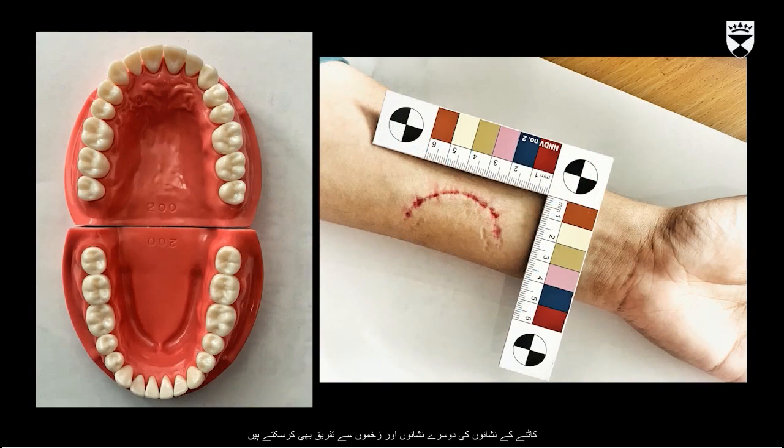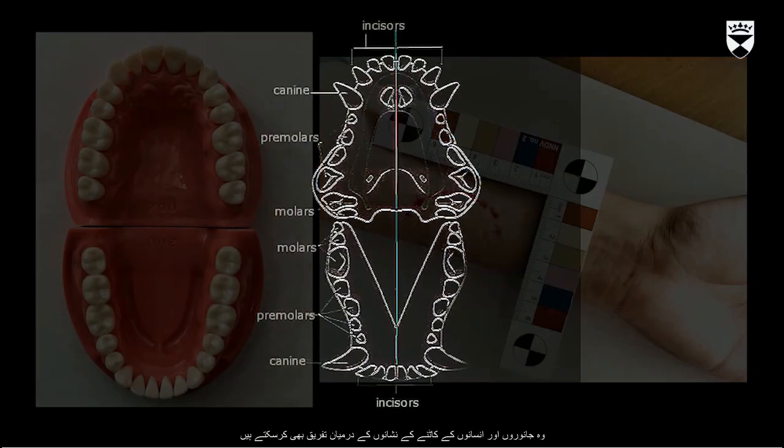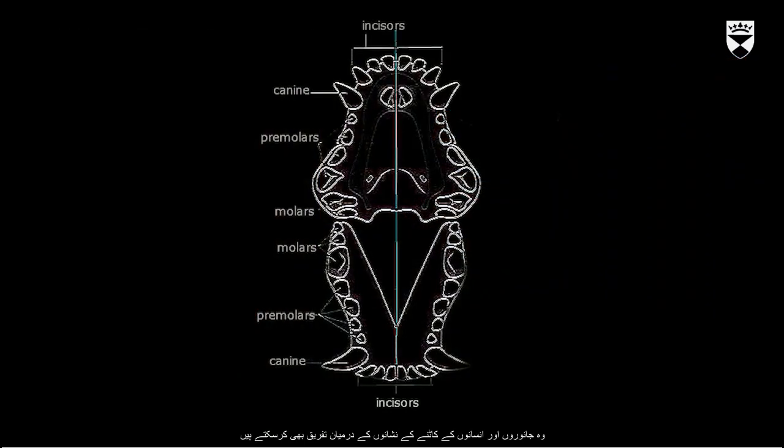They can differentiate bite marks from different injuries or marks, they can differentiate human bite marks from animal bite marks, and if it is a human bite mark, they can determine whether it is an adult bite mark or a child bite mark.